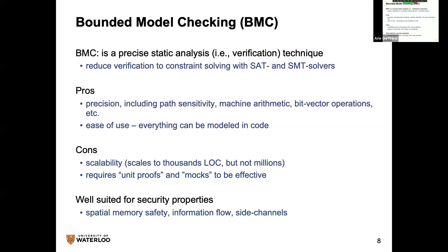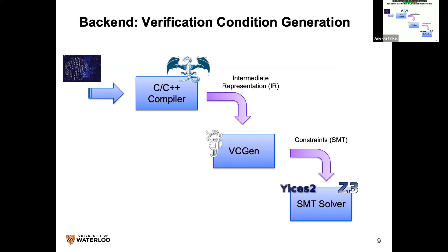With BMC everything works, and if it's slow it's because you're using a hash table and storing things — that's understandable. That's part of what this talk is about: BMC is really easy to give to developers. It scales to some amount, and being effective does require some things — you can't just take a BMC checker and throw a program at it; you need to give it something like a unit test.